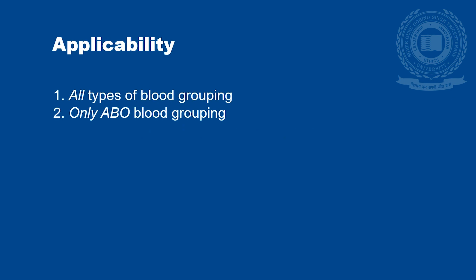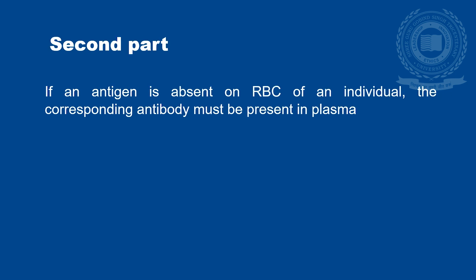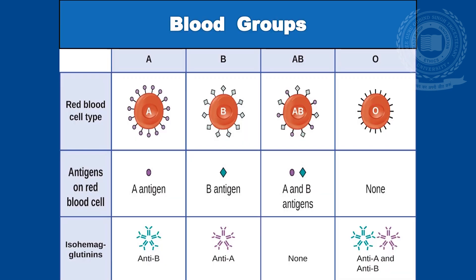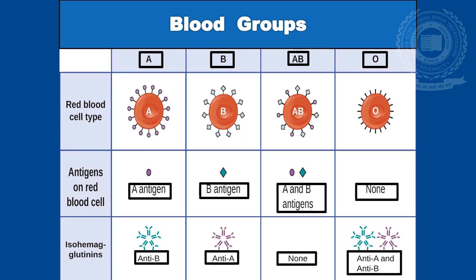Landsteiner's Law has two parts. The first part is applicable to all blood groups, while the second is applicable only to ABO blood grouping. The first part states that if an antigen is present on the RBC of an individual, then the corresponding antibody must be absent from plasma. The second part states that if an antigen is absent on the RBC, the corresponding antibody must be present in plasma. This can be described clearly from the diagram: in blood group A, antigen A is on RBC and anti-B antibody is in plasma; in blood group B, antigen B is on RBC and anti-A antibody is in plasma; blood group AB has both antigens but no antibody; while blood group O has no antigen but both antibodies in plasma.